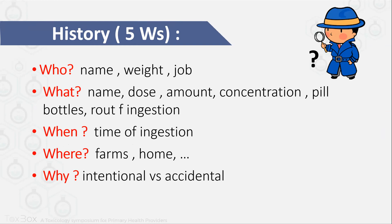The first W is who — know the patient, their job, and their weight to determine the dose and if any antidote is needed. Then what they ingested: the name, dose, route, and concentration. If you have the bottle, it's great. Always, always consider co-ingestion. When — the time of ingestion — this helps with the course of disease and whether you can give activated charcoal within one hour. Where — is it a farm? Consider pesticide. Is it at home? Consider drugs. Sometimes you have to trace where the patient was at the time.